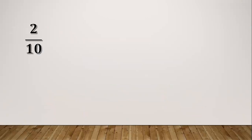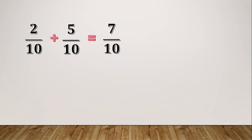Example: two tenths plus five tenths. In adding similar fractions, just add the numerator and copy the denominator. So simply add the numerator: two plus five equals seven. Copy the denominator which is ten, so the answer is seven tenths.